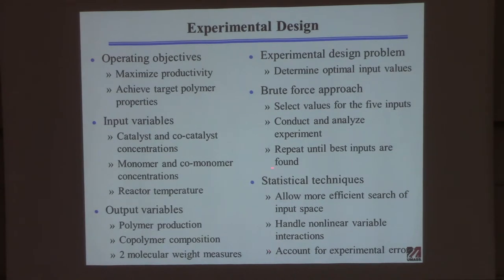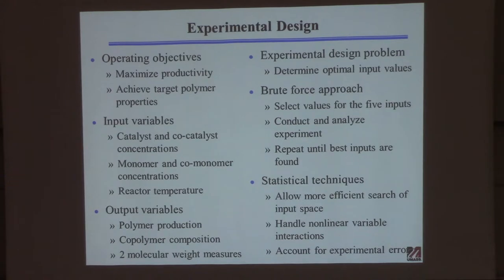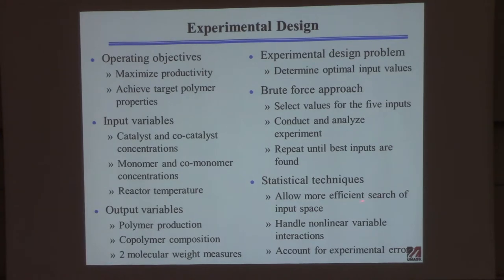What I'm going to teach you is the statistical design of experiments, which allows more efficient search of the input space. The input space is five-dimensional — catalyst, co-catalyst, monomer one, monomer two, temperature — and you're trying to find a place in that space that meets the specifications. It's non-trivial because the system is not linear.